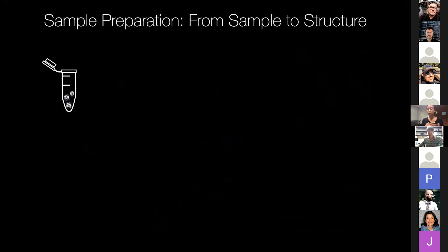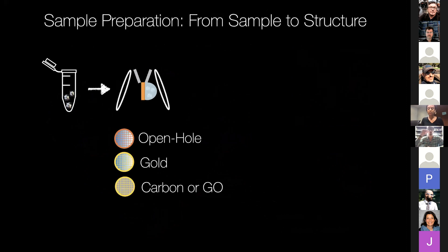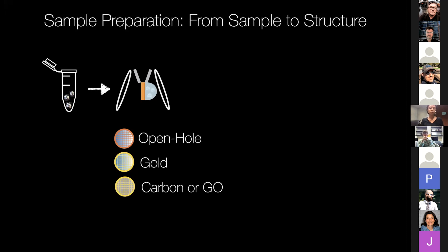Assuming you have a sample purified and ready to go, during this talk I will be highlighting the steps essential for preparing your sample. Shown in white are the blotting pads, and in gray are the tweezers that have locked on to a grid of interest. In our lab we use copper grids and gold grids, and we play around with the different layers we add to the grids to create an environment where your sample of interest in liquid buffer can now stick to the prepared grid. We use open-hole, gold, and widely use graphene oxide grids.